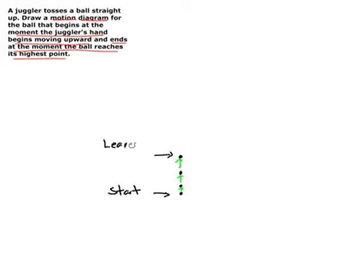Right at this point, the ball leaves the juggler's hand and now it's just moving upward through the air. As the ball rises to its highest point, how does the spacing of the successive dots in the motion diagram change? Well, as the ball moves upward after having left the juggler's hand, it's slowing down. So the velocity vectors are still directed upward, the motion is still upward, but it's going slower and slower. The points get closer together and the velocity vectors get shorter and shorter until the ball reaches its highest point. And that is when our problem finishes.